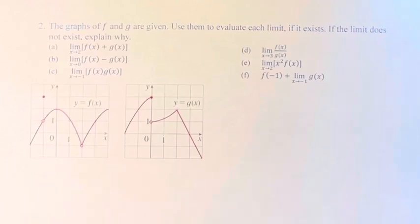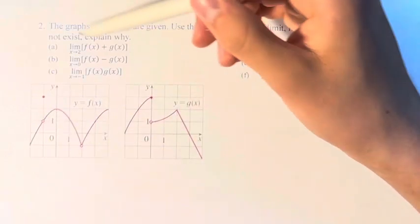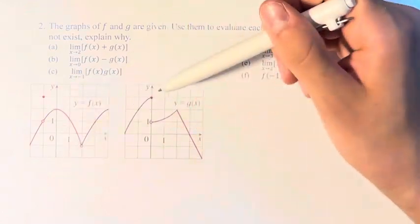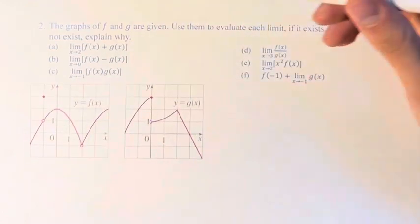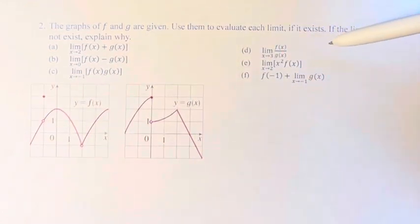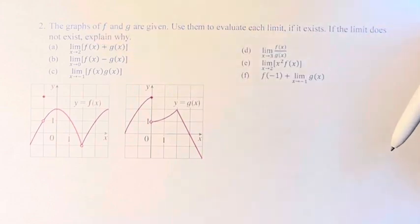Hello, and welcome back to another video. In this problem, we're told that the graphs of f and g are given, and we have them right here. We need to use them to evaluate each limit if it exists, and if it does not exist, we need to explain why.